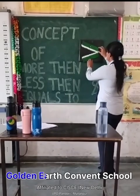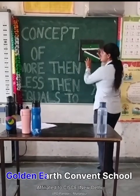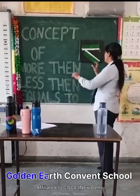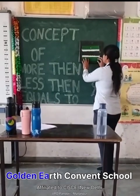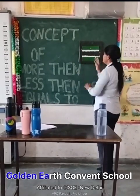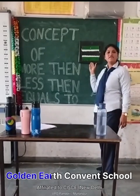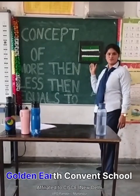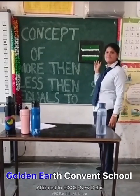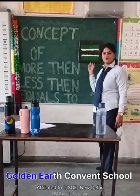Where you see two numbers are equal, here is the sign of equals to. This sign is used when two numbers are the same.